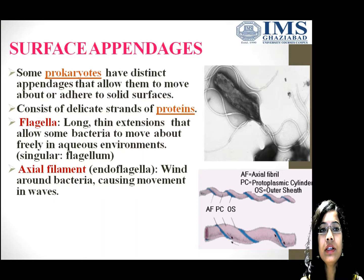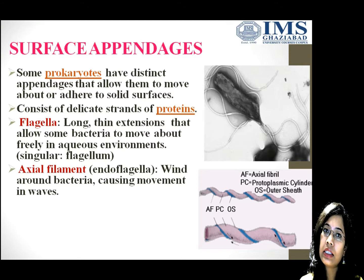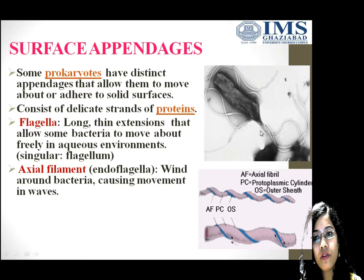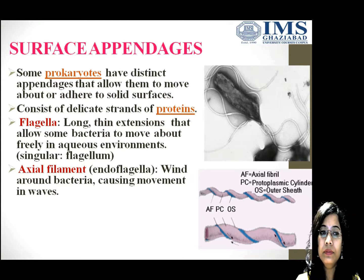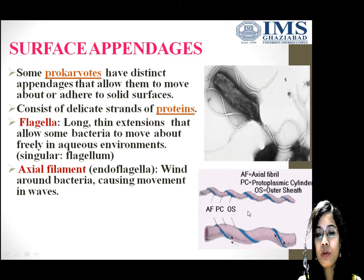Some prokaryotes have distinct appendages that allow them to move about or adhere to solid surfaces. Flagella consist of strands of proteins such as flagellin proteins. Flagella are long thread-like extensions that allow some bacteria to move about freely in an aqueous environment — the singular term is flagellum. Next comes the axial filament, also known as the endoskeleton. As you can see in this figure, there is a spiral bacterium with a blue line that is an endoskeleton which provides a wavy motion of movement to the bacteria.